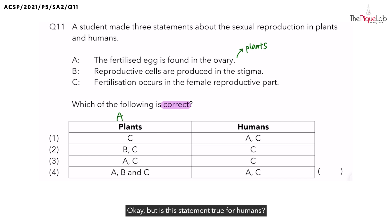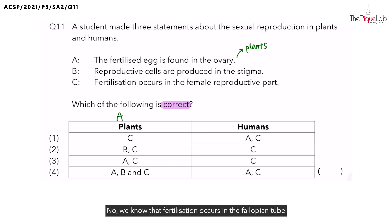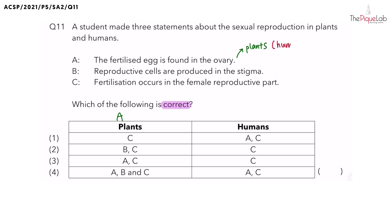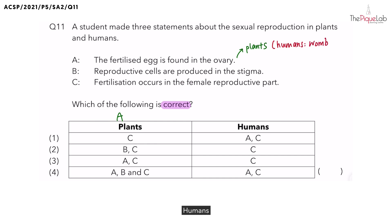But is this statement true for humans? No. We know that fertilization occurs in the fallopian tube and the fertilized egg will eventually be implanted in the womb. Therefore, for humans, we will find the fertilized egg in the womb.